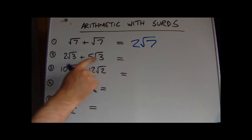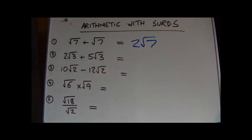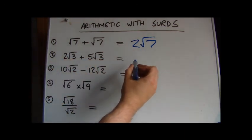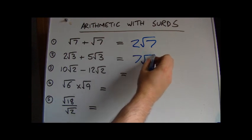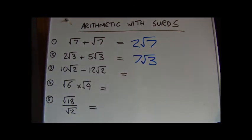and 5 root 3. They're the same numbers under the roots, so we've got 2 plus 5, which gives us 7 root 3. It's very easy to do arithmetic like this. Again, we've got like surds for question 3, so